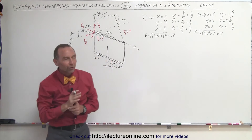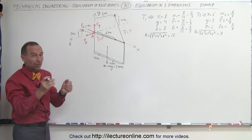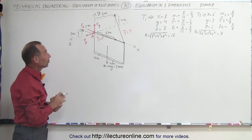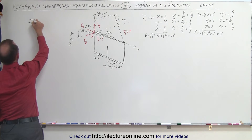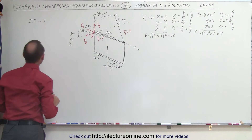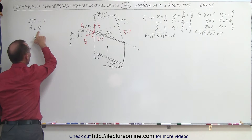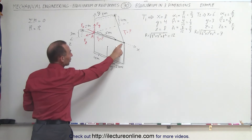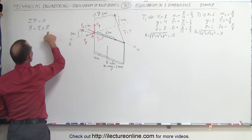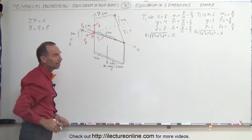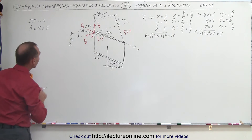Now we're ready to solve for T1 and T2. The best way is to find the moment, because since everything is in equilibrium, the sum of all moments must equal zero. The moment is found by taking the position vector where each force acts — where cable one acts, where cable two acts, and the weight of the sign — and multiplying by the individual forces. There will be three forces, so we do this three times.